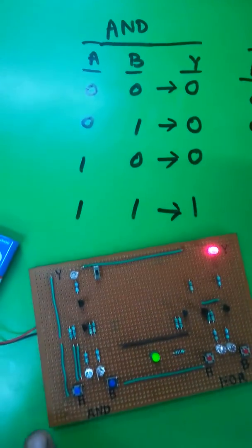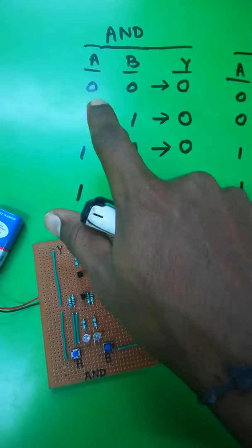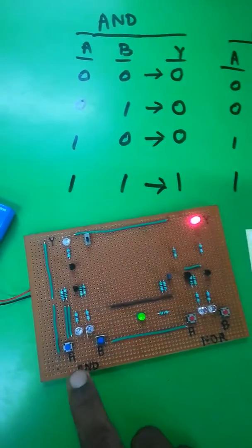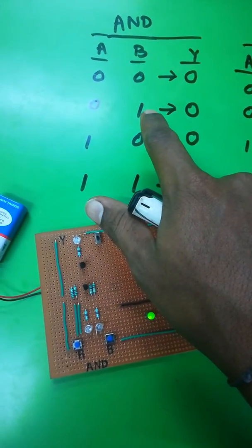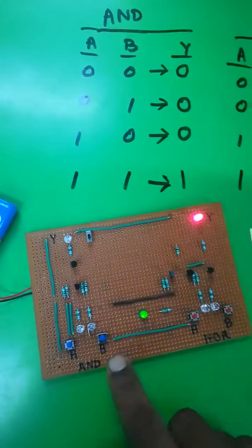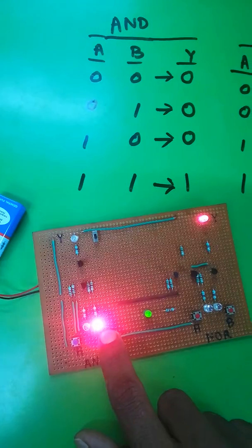This is AND gate. If both are 0, then 0. If B is equal to 1, then 0.